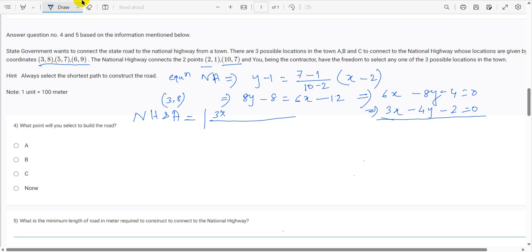Distance is equal to 3 into 3 minus 4 into 8 minus 2 divided by root of 3 squared plus minus 4 squared. So it is 9 minus 32 minus 2 and it is 5. So 9 minus 34, 25 divided by 5. It is 25 by 5 that is 5 units. Distance between national highway and the point A.